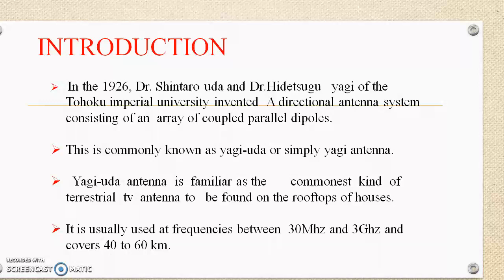An antenna is an important tool in communication engineering. It is an electrical device which converts electric power into radio waves. It radiates electromagnetic energy into free space at the time of transmission, and collects electromagnetic energy from free space at the time of reception. It can also be used for matching the transmission line or waveguide to the surrounding medium. Without an antenna, electromagnetic energy would not be radiated and wireless communication over long distances would be impossible. A transmission line is used to transport electromagnetic energy from the transmitting source to the antenna, or from the antenna to the receiver.